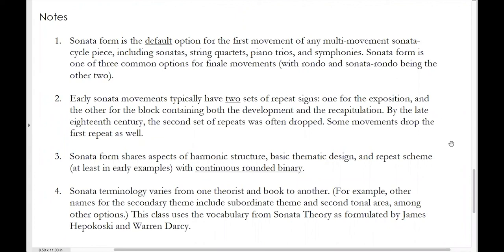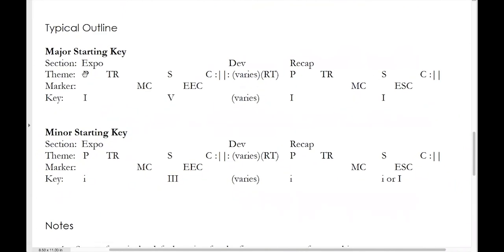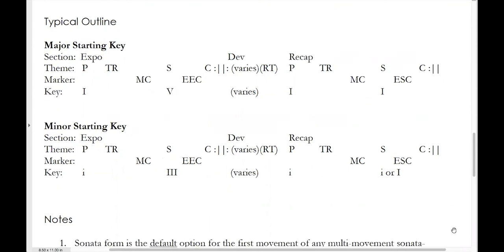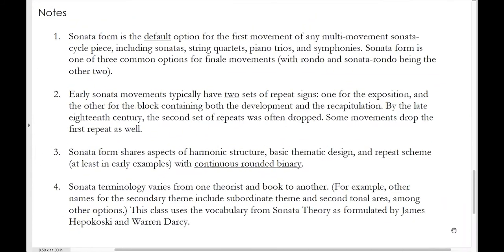Early sonata movements typically have two sets of repeat signs: one for the exposition and the other for the block containing the development and the recapitulation. The exposition is typically repeated and the development and recap together are repeated as one big block. The likelihood of having those repeats varies depending on where you're at in music history. Mid-period 18th century sonata forms typically will have both repeat signs included. By the late 18th century, often the second set of repeats was dropped. And some movements drop all of the repeats, so you just get one pass through each section.